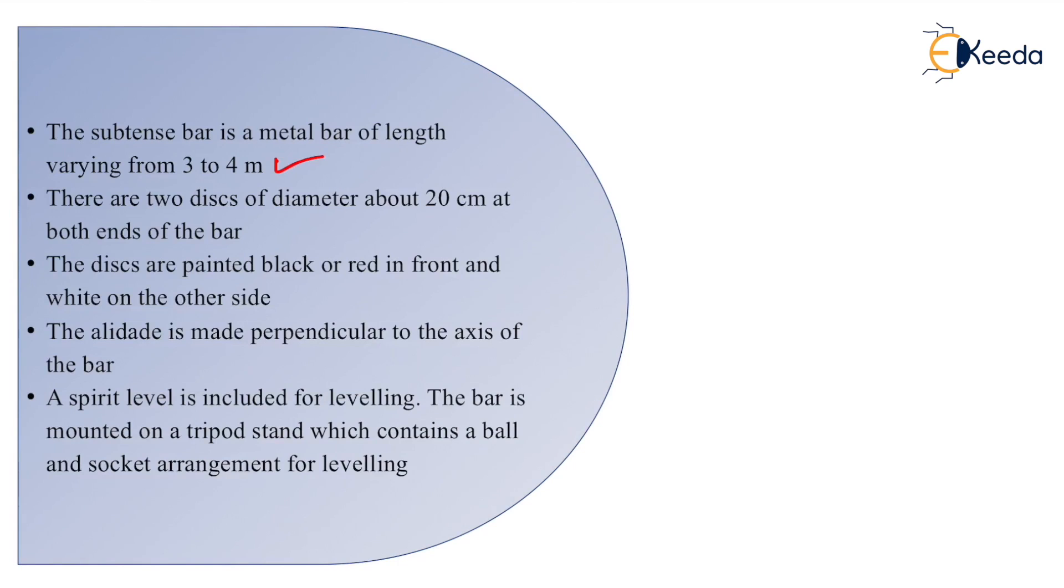So whenever we are using subtense bar, we have to make sure that the bar is properly leveled. And then by setting up the instrument over your instrument station, we have to bisect target 1 and then target 2. So by knowing this horizontal angle theta and the distance between two targets, about three meters, we can calculate the horizontal distance.